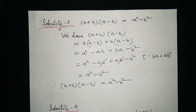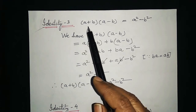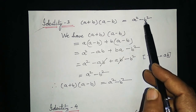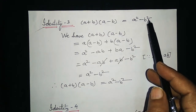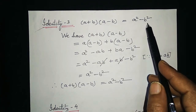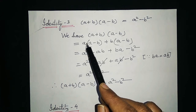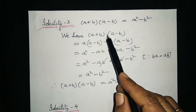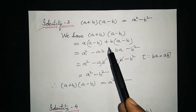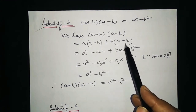Now see the proof for identity 3. Identity 3 is: a plus b into a minus b is equal to a squared minus b squared. We write a and multiply a by a minus b, then plus b, and multiply plus b by a minus b.